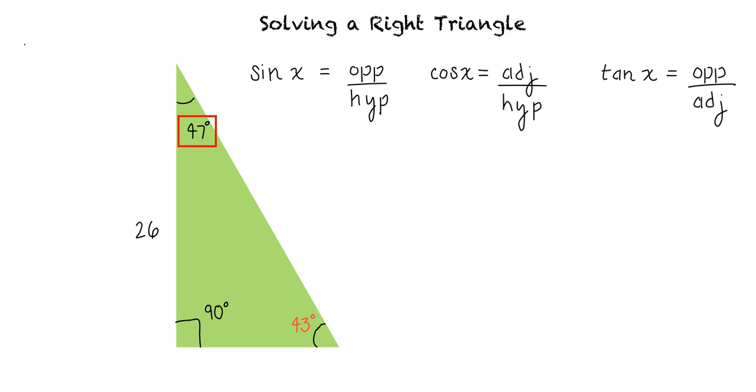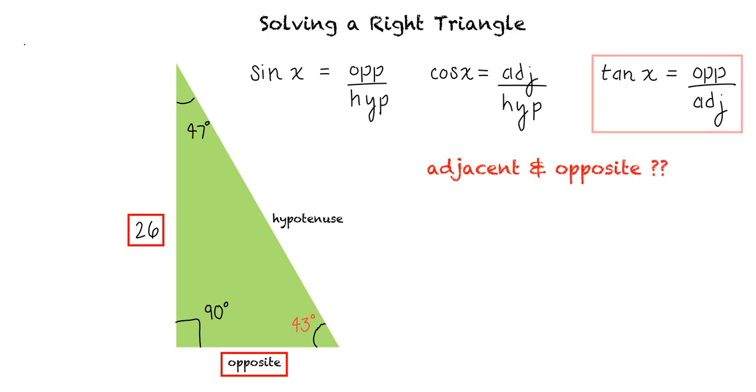Using 47 degrees as our angle x, we can see that we will need to find the opposite and hypotenuse side lengths. Let's start by finding the opposite side length. Since we have the adjacent side length already, we will need to use a trigonometric ratio that contains both the adjacent and the opposite sides. This is tangent.